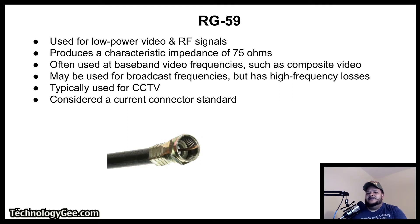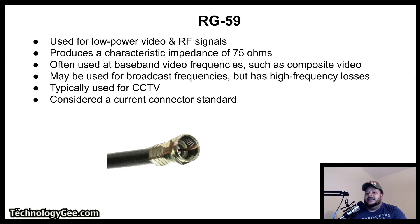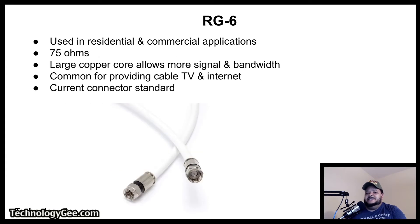The RG59 connector is a specific type of coaxial cable connector often used for low power video and radio frequency signal connections, and produces a characteristic impedance of 75 ohms. RG59 is often used at baseband video frequencies such as composite video. It may also be used for broadcast frequencies, but its high frequency losses are too high to allow its use over long distances. RG59 is typically used with CCTV and is considered to be a current connector standard.